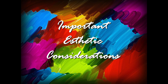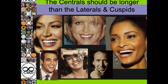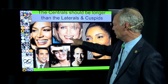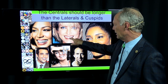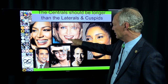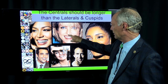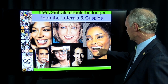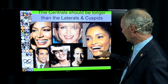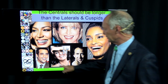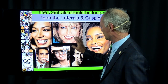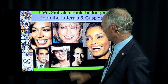Some important aesthetic considerations: the central should be longer than the laterals and cuspids. When viewed from the front, the central incisors should always be the longest teeth. If they're not, you develop a reverse incisal plane which makes the person look strange and like they're frowning. The centrals are the longest teeth in the incisal plane when viewed from the front.